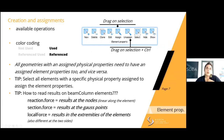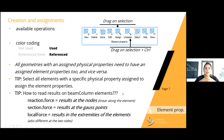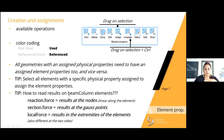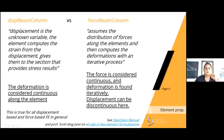An important point to remember about beam-column elements is that there are different types of results. There are results at the nodes, which are interpolated linearly along the element; results at the Gauss points defined by the integration scheme in the physical property; and results at the extremities of the element, which can be different on the two sides of each node. This distinction is useful for interpreting results correctly.